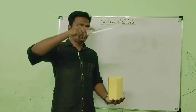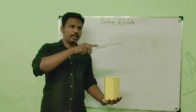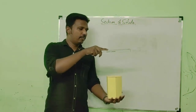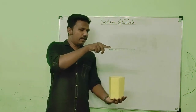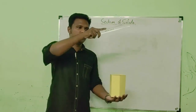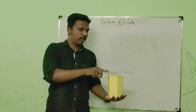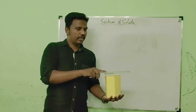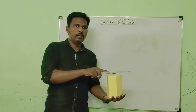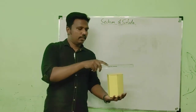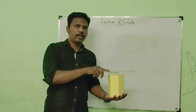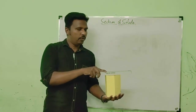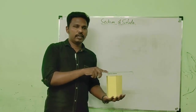Similarly, if the cutting plane is oriented parallel to VP and perpendicular to HP in this alternate orientation, the sectional view will be visible from the front. From the front view we can see the sectional view, but from the top view we cannot see a sectional view.